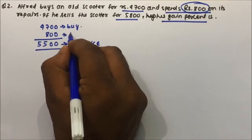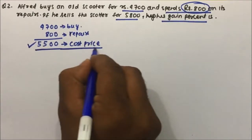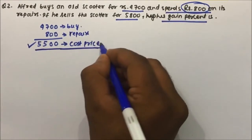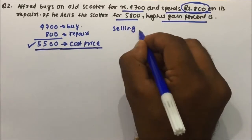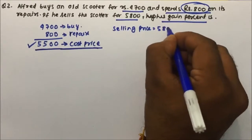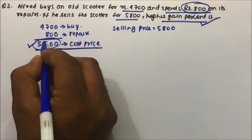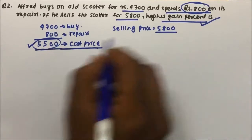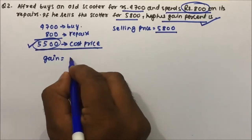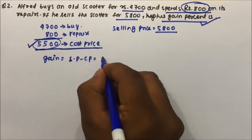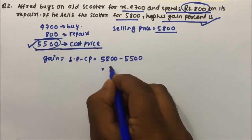Because 4700 he is buying and 800 rupees he is spending on the repairs, so this complete money 5500 is going from his pocket. After spending 5500 now he can sell the scooter. In how much price is he selling the scooter? The selling price of the scooter is 5800 rupees. Definitely he is buying at 5500 rupees and selling at 5800 rupees, then there is a gain. What is the gain percent? Gain will be selling price minus cost price which is 5800 minus 5500 and which equals to 300 rupees.